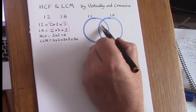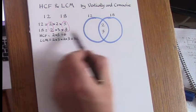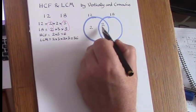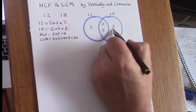We put common factors in the intersection zone, so the 2 and the 3 are placed here, and the remaining factors of 12 is just 2, so that's 2 times 3 times 2 is 12, and for 18 is 3.